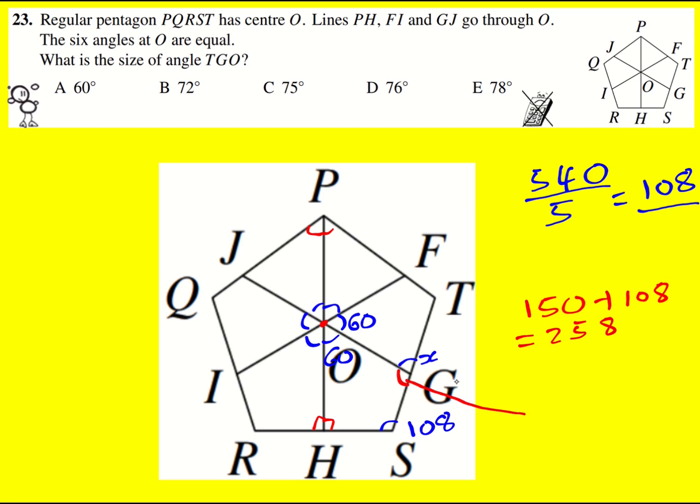So that missing angle here is going to be 102, 360 minus 258. And then X plus 102 must equal 180 because they're on a straight line. So my answer is going to be 78.